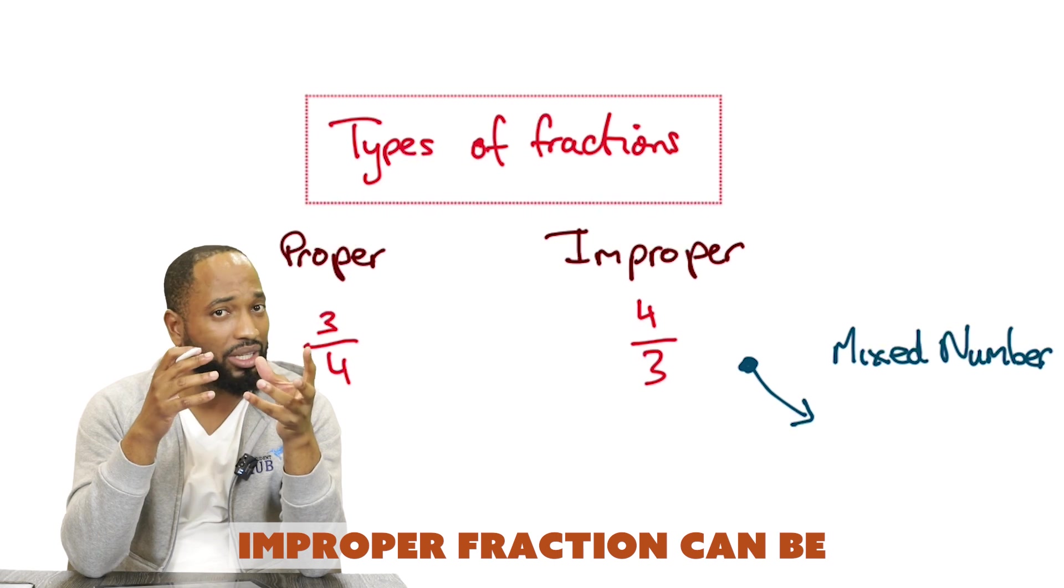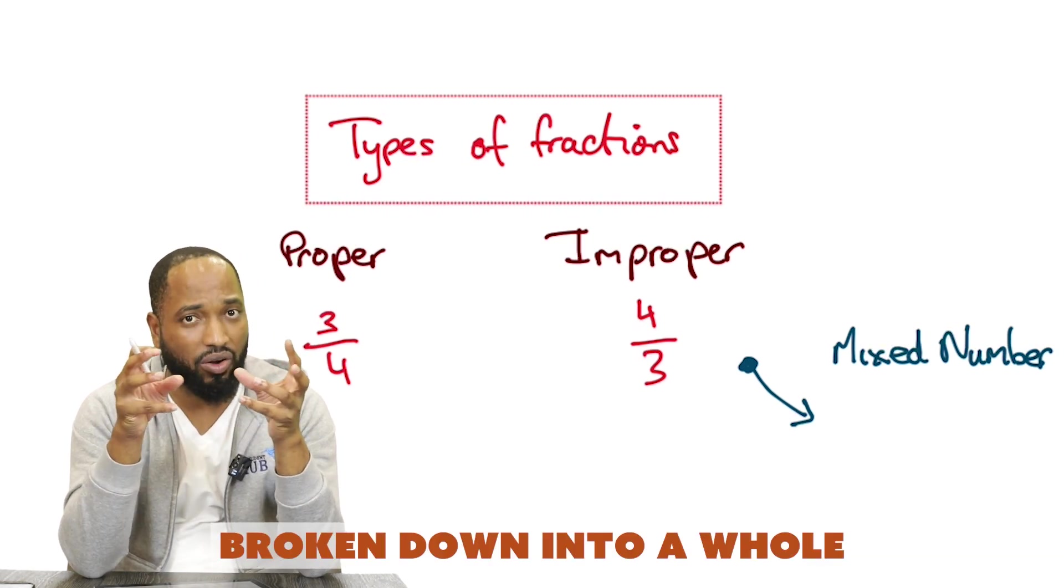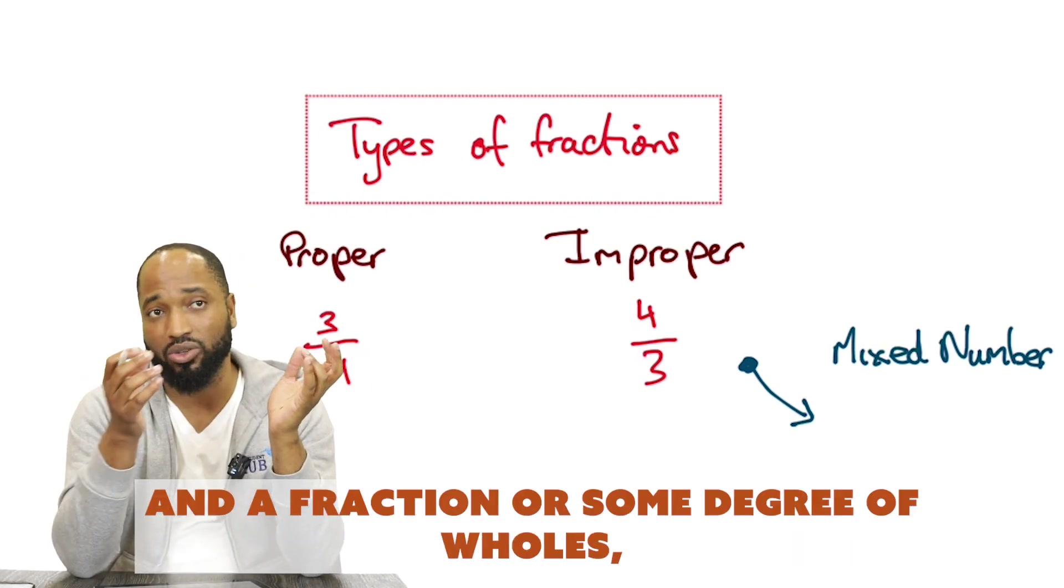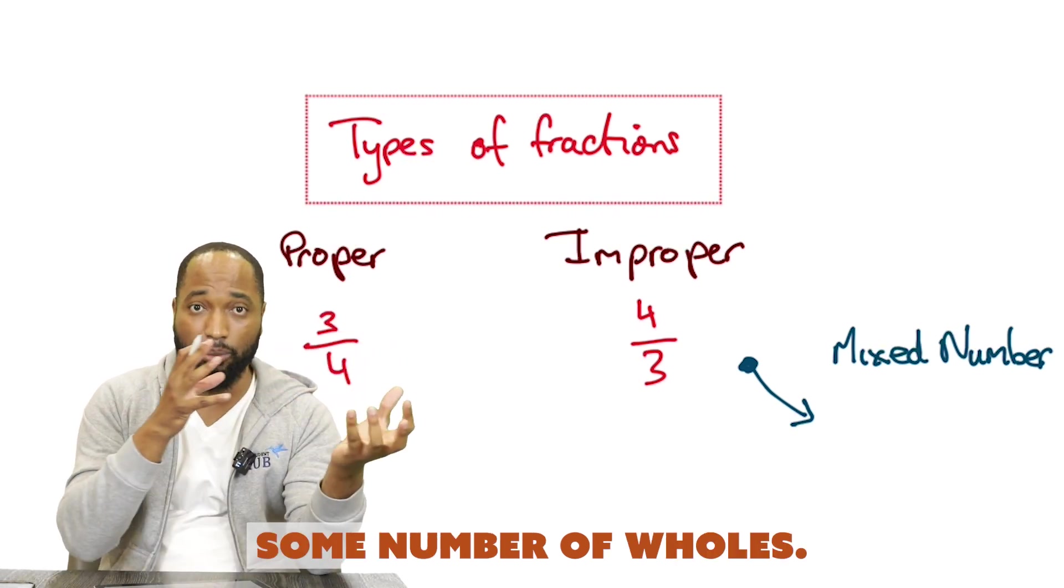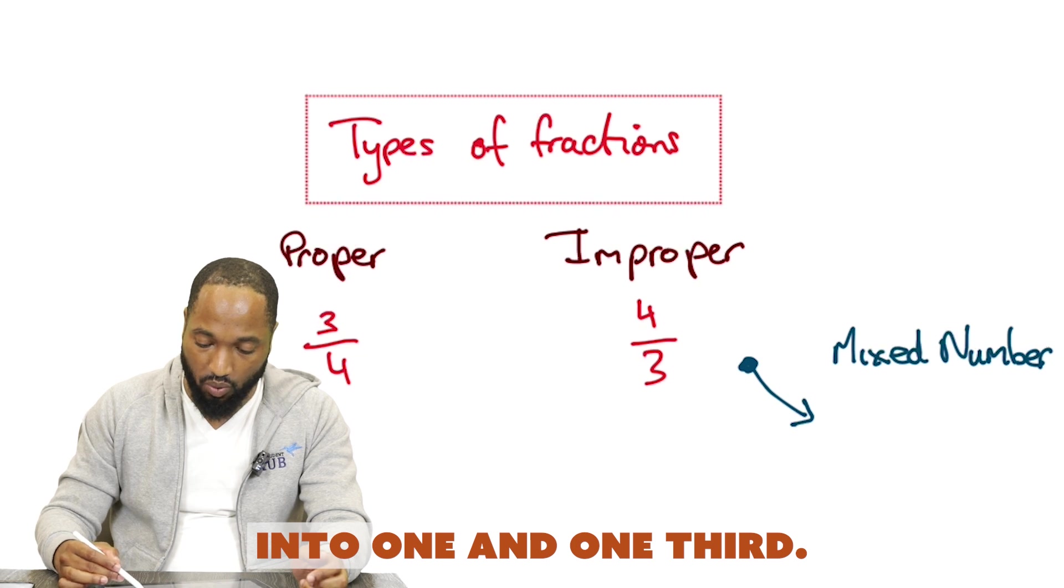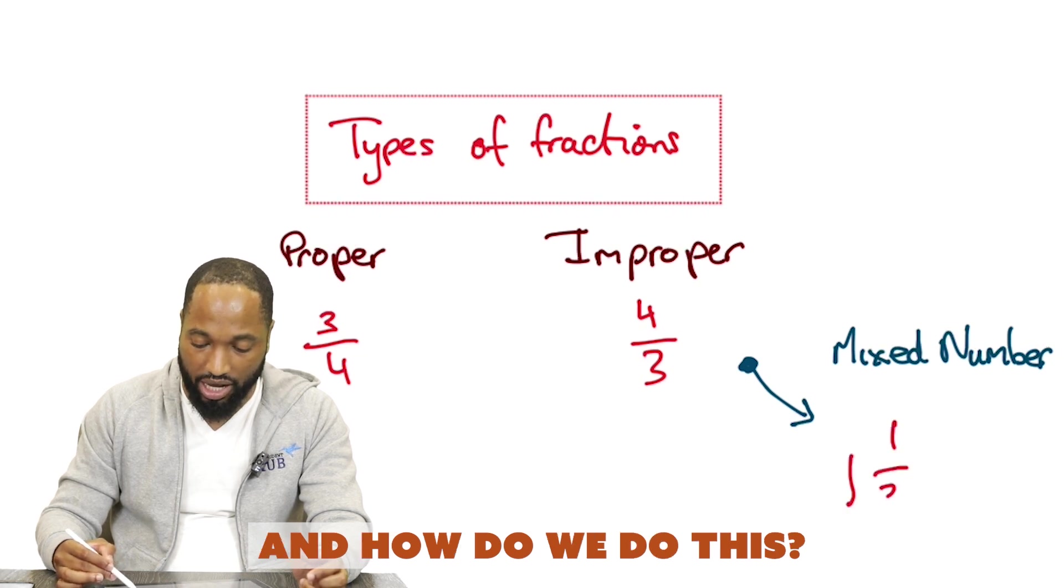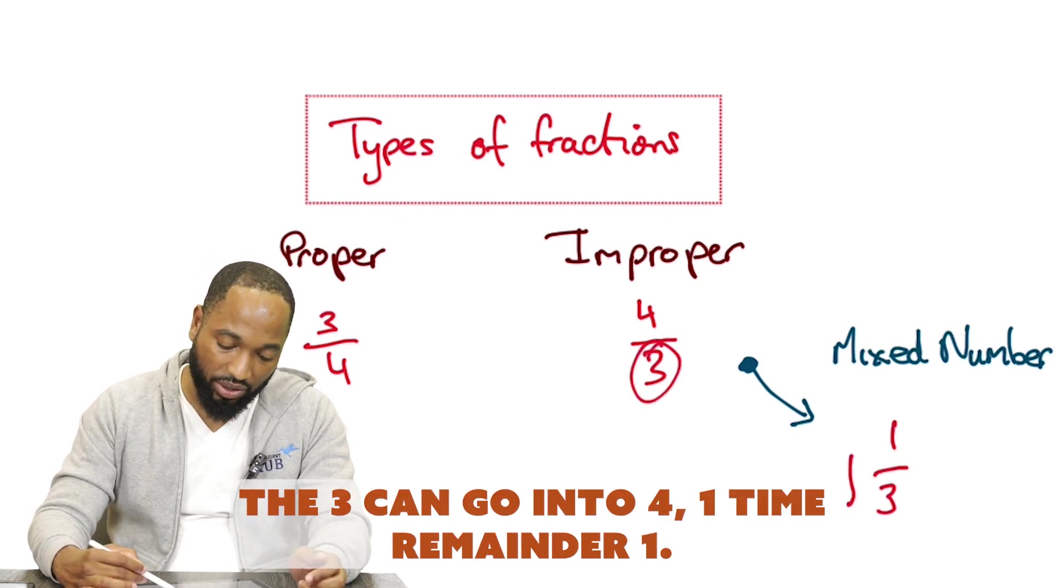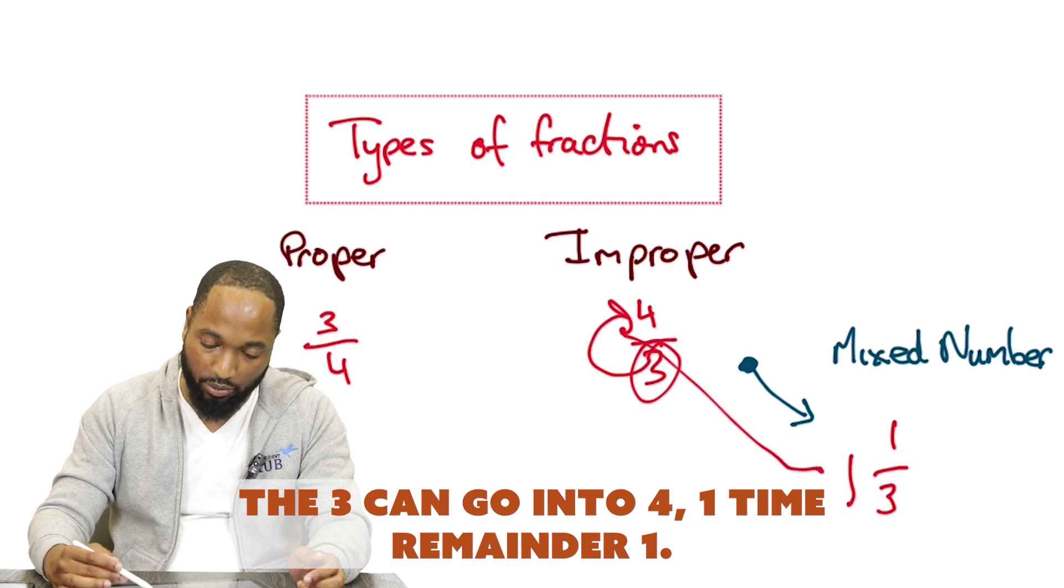Improper fractions can be broken down into a whole and a fraction, or some number of wholes. Like, for example, we can switch this improper fraction into 1 and 1/3. And how do we do this? You see, 3 can go into 4 one time, remainder 1.